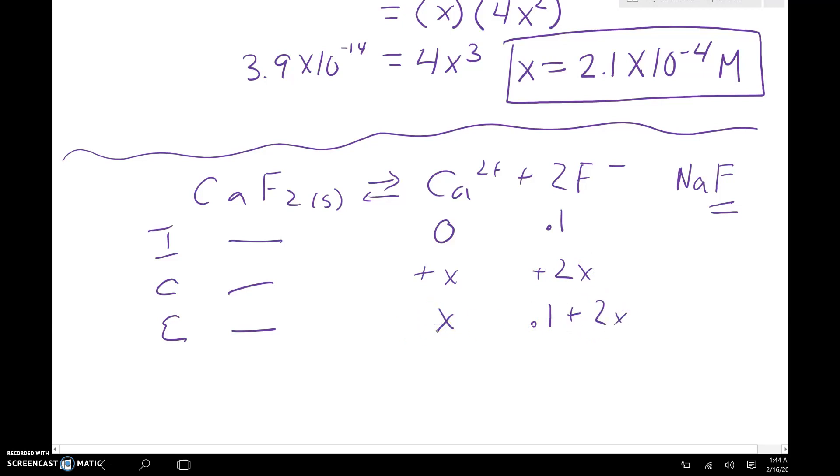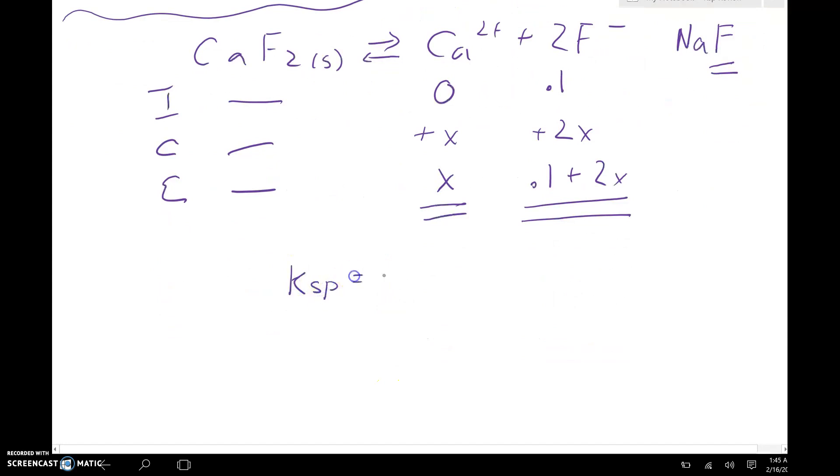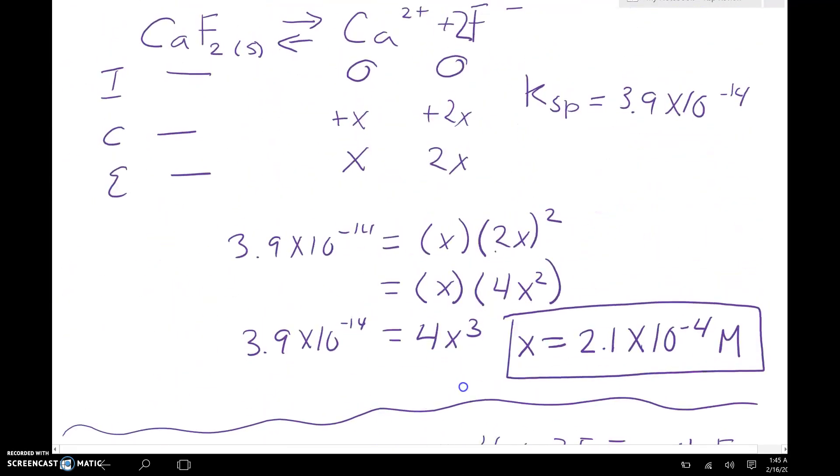That would just end up changing my ICE table a little bit. Then I would do exactly the same stuff but with the X and the 0.1 plus 2X. But remember when we have something like a number plus or minus an X value, if we have that small K, which in solubility we almost always do have that small K, then we can go ahead and make that assumption where we don't have to solve for a quadratic. In other words, when I'm writing my Ksp expression, I would write like X times 0.1 plus 2X, but I would make that into X times 0.1. I can drop this 2X term, and then fill in my solubility and solve and go from there. Just be cautious of this common ion problem. Sometimes they'll have you do one without a common ion and then immediately do one with a common ion.